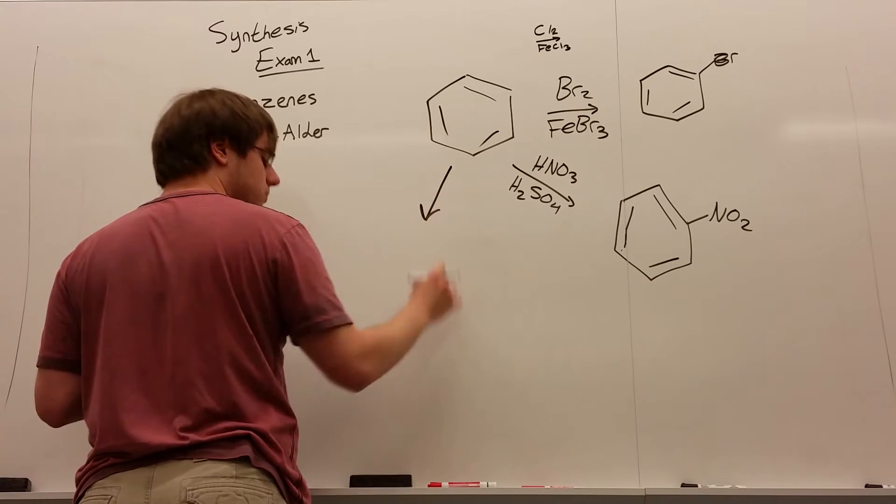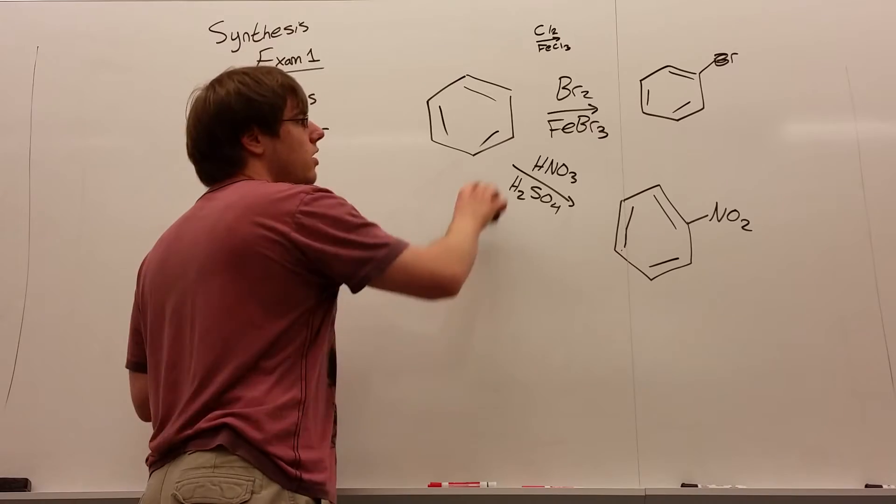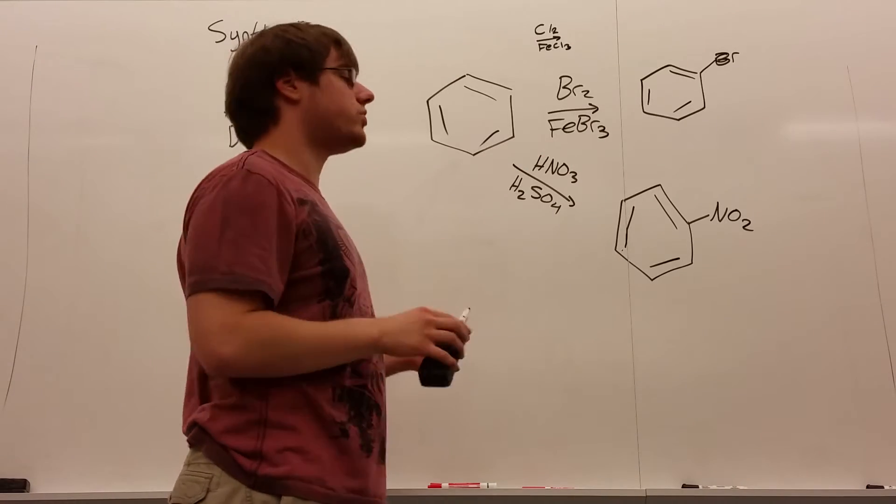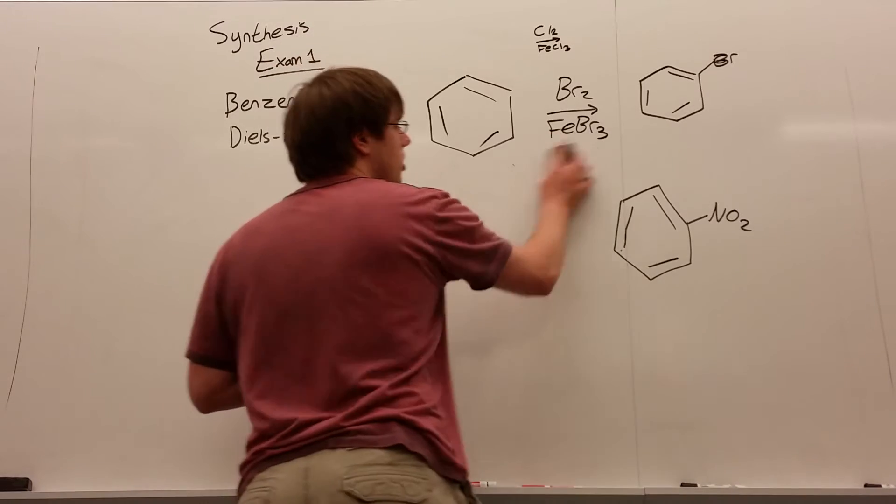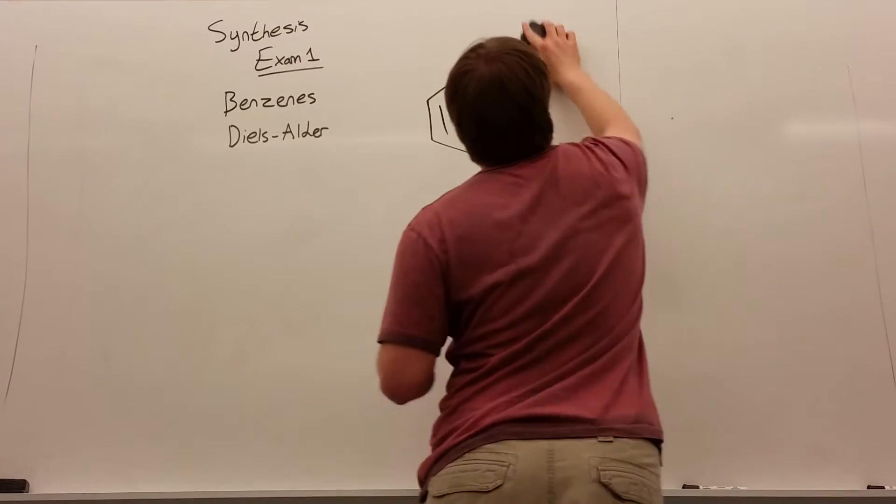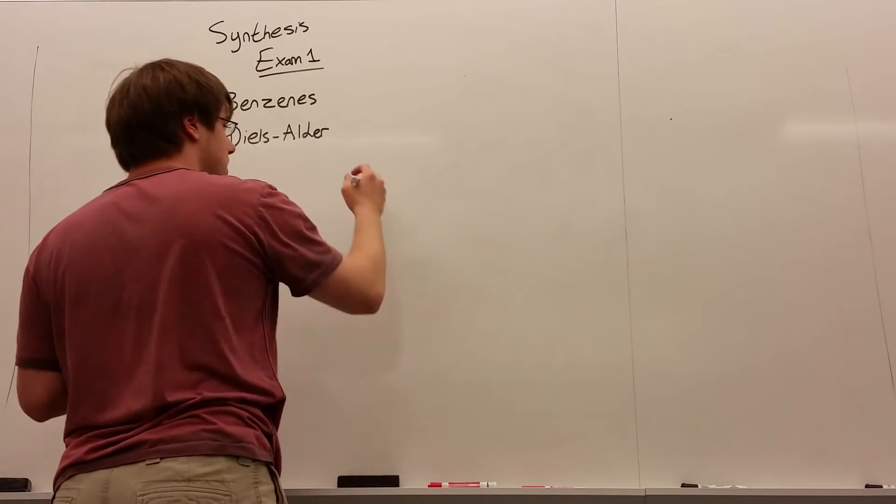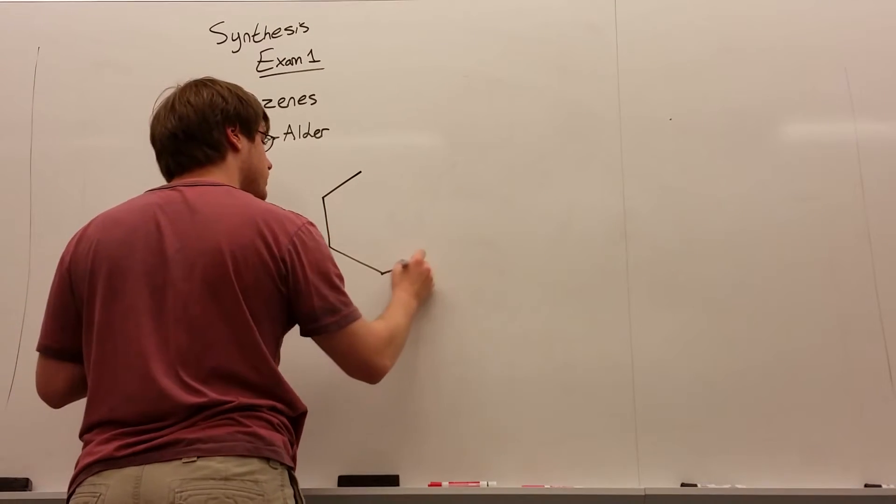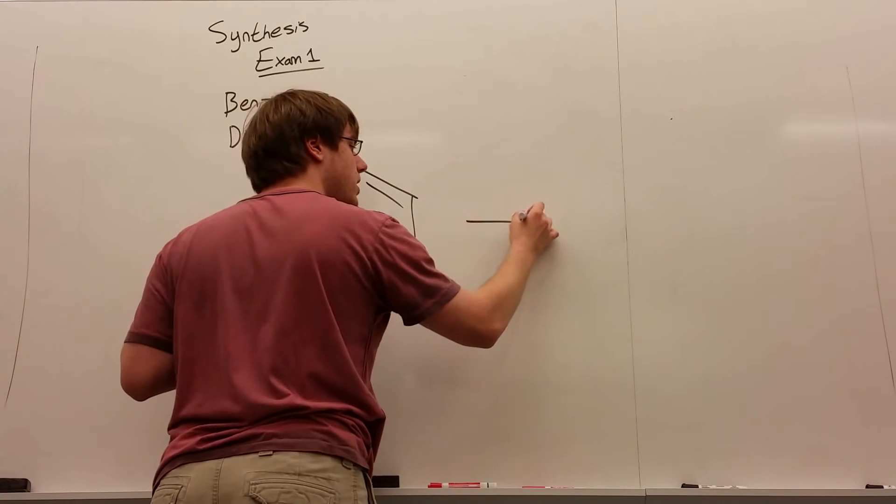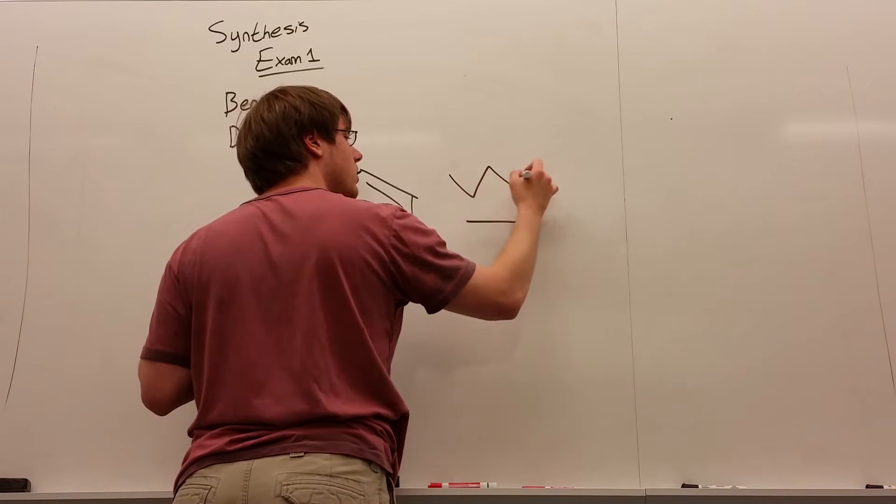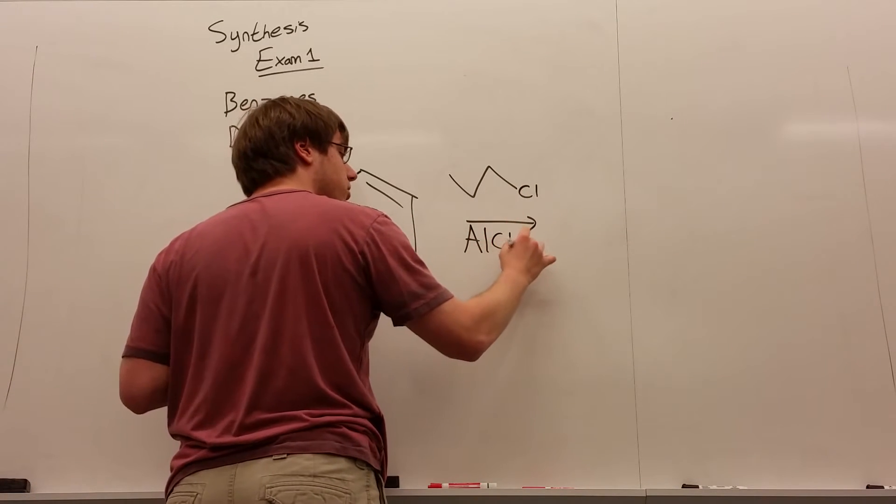The next reaction I'm going to talk about in a little more detail. So these two are kind of generic. They're the ones that are easy. You don't need to know any particulars about them. They just add what they add. But this next one is kind of important to know because it does some weird things. And it is where you have a benzene, and you add a carbon chain with a leaving group on it, like chlorine, and then you see AlCl3.